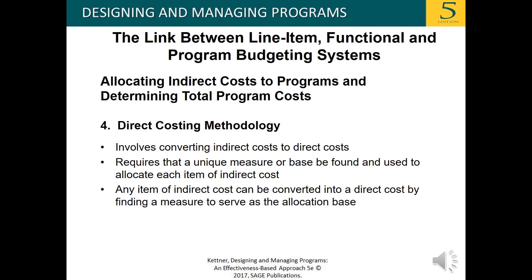The direct costing methodology involves converting indirect costs to direct costs. It requires that a unique measure or base be found and used to allocate each item of indirect cost. Any item of indirect cost can be converted into a direct cost by finding a measure to serve as the allocation base.